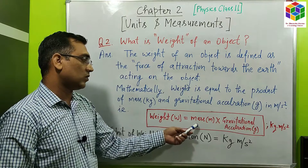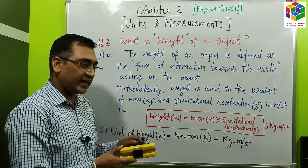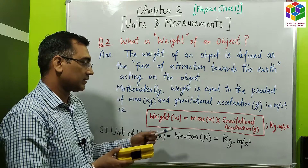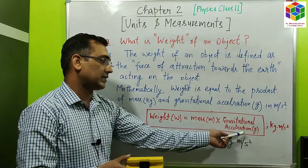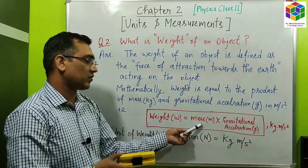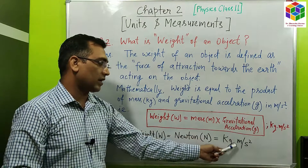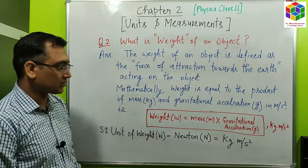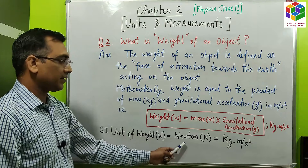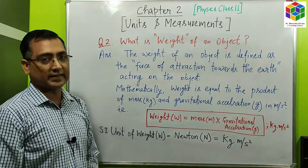Weight W is equal to mass m multiplied by gravitational acceleration g acting on it towards the earth. The gravitational acceleration unit is meter per second square and the unit of mass is kilogram. So the unit of weight will be equal to kilogram into meter per second square, which is known as Newton. The SI unit of weight is Newton, which is equal to kilogram into meter per second square.